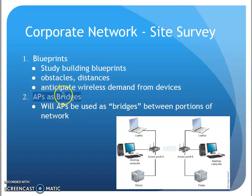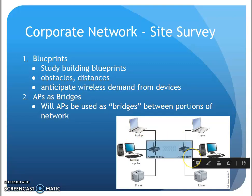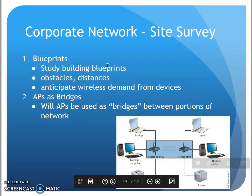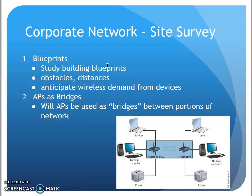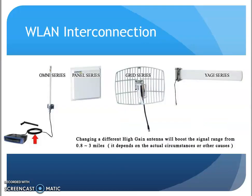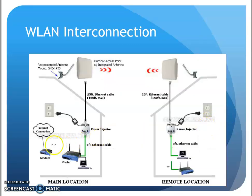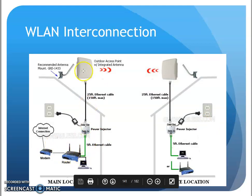I also need to consider whether any access points need to act as bridges connecting two parts of my network. For example, HACC had multiple buildings in the Harrisburg area and was actually using a wireless bridge to connect the main HACC campus to the Midtown 2 building. We just need to think about distance and lining up our access points to communicate. I can actually add an external antenna on some of my access points and then do the reverse at the other site to connect those two sites together.